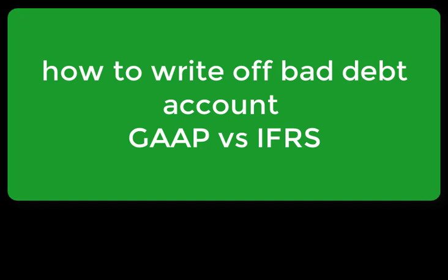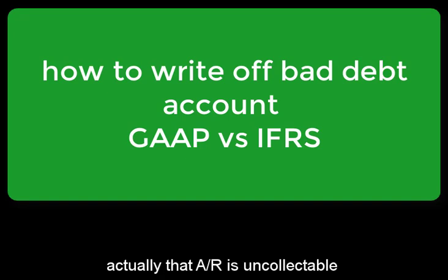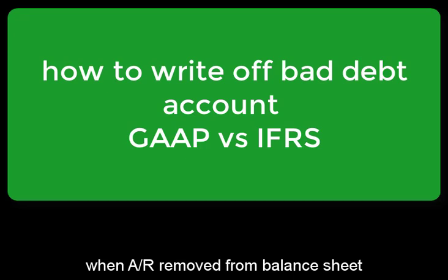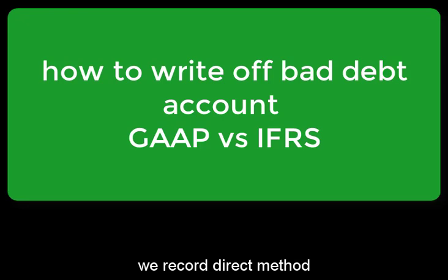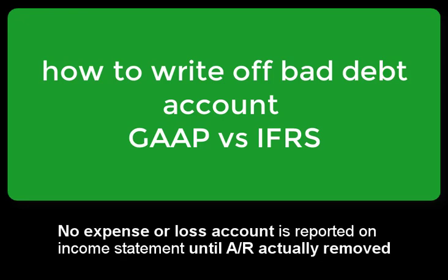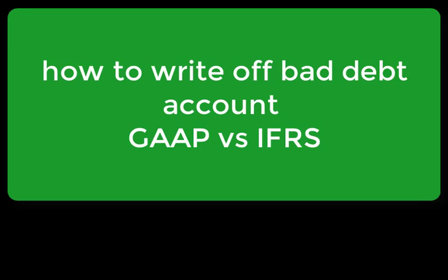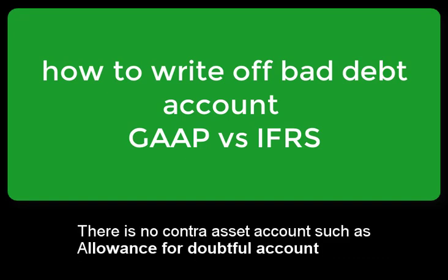The account receivable is removed directly from the company's receivable account. The expense is reported to the income statement until the account receivable is actually removed from the company's receivable account. The account receivable is used directly from the account.